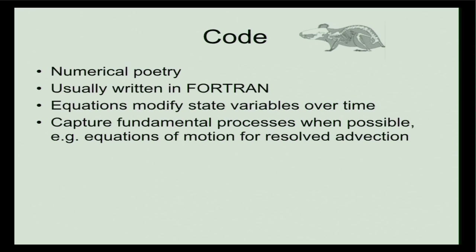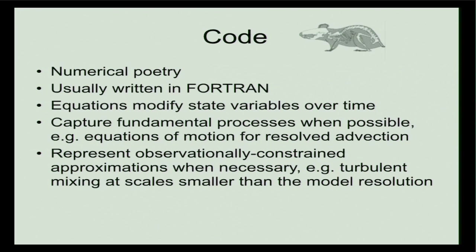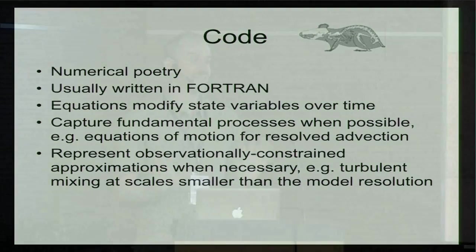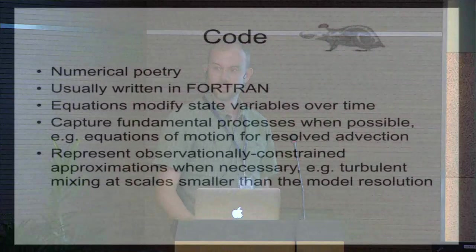This poetry is meant to capture fundamental processes when possible. For example, the equations of motion for resolved advection in the ocean are really pretty fundamental — conservation of mass, the Coriolis parameter. But often you're trying to represent processes that we don't have good fundamental laws for, and in those cases you use observation-constrained approximations. There's lots of these in GCMs. For example, turbulent mixing at small scales, dissipation of energy — GCMs do not conserve energy, which was a big surprise to me. The dissipation of energy is something that's handled with these ad hoc, observation-constrained things that people spend a lot of time trying to improve, but they're not fundamental equations.